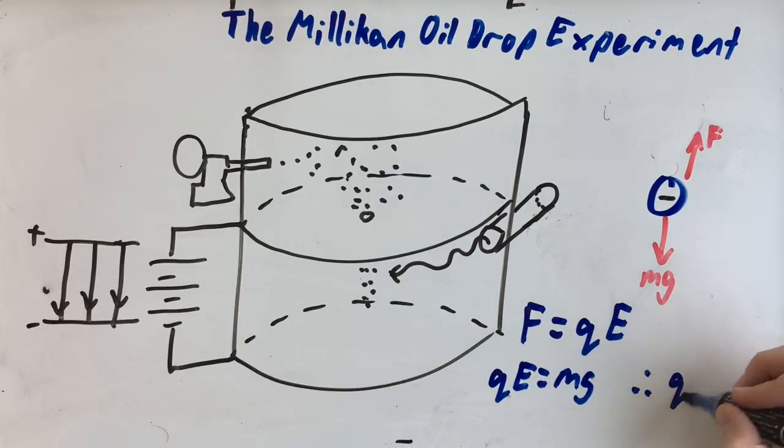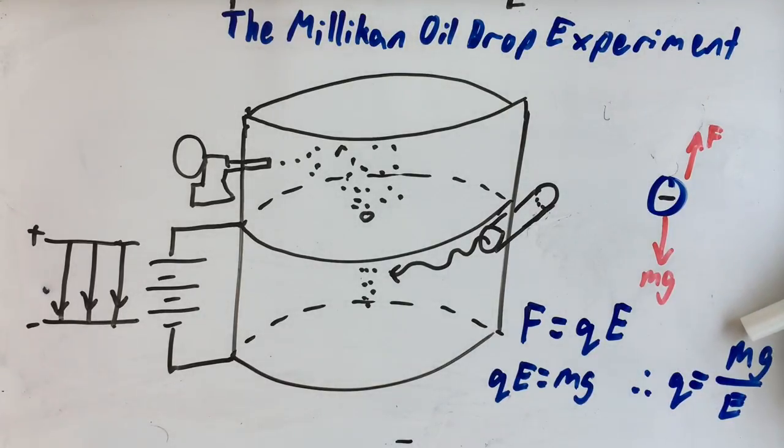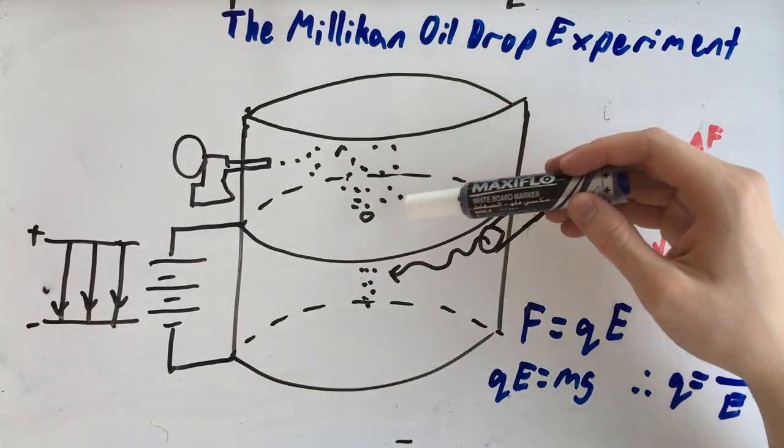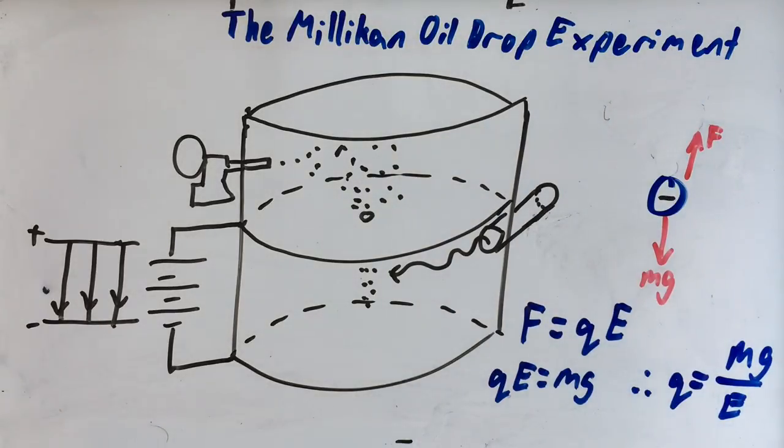Therefore, Q is equal to MG over E. The mass you can figure out by measuring the diameter of the droplets, then finding the radius and the volume. You know the density because you know it's oil. G is just the downwards acceleration from the force of gravity.